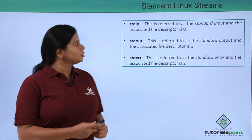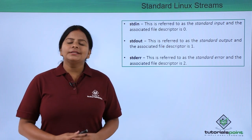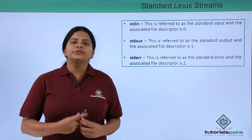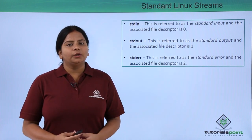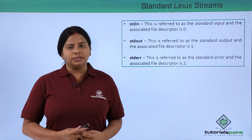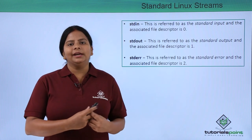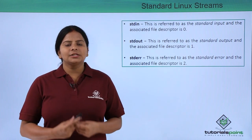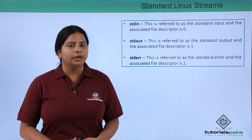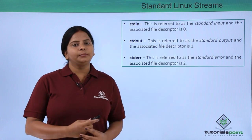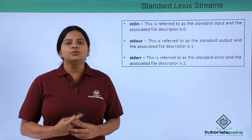The next one is called stdout, which is for giving the output. Whenever a program produces any particular output, the stdout file is called by your program so that we can get the output. The file descriptor for stdout is one.